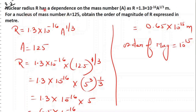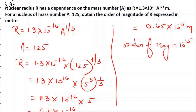The next question: nuclear radius has dependence on mass number. The formula is given, and the mass number value is 125. We put A equal to 125 with power 1 by 3. We can write 125 as 5 to power 3, so the 3 and 3 cancel out, and we directly multiply 1.3 by 5 to get 6.5, that is 0.65 into 10 to power minus 50, so the order of magnitude is 10 to power minus 50.